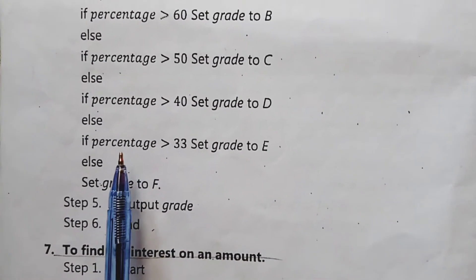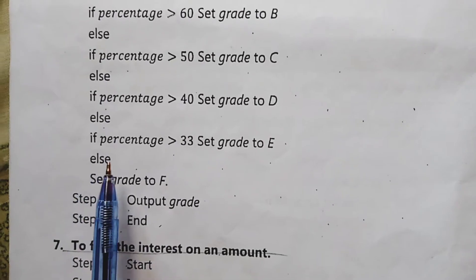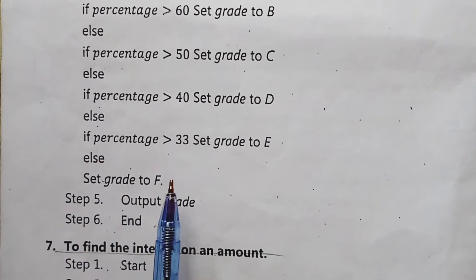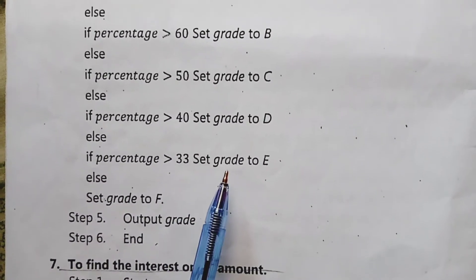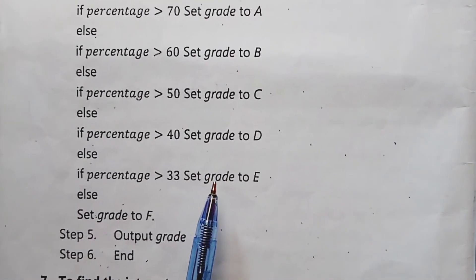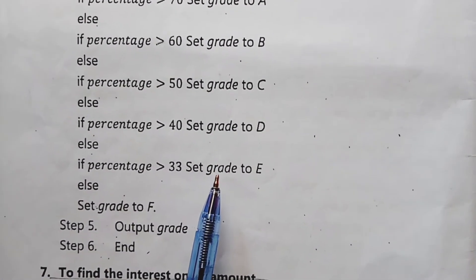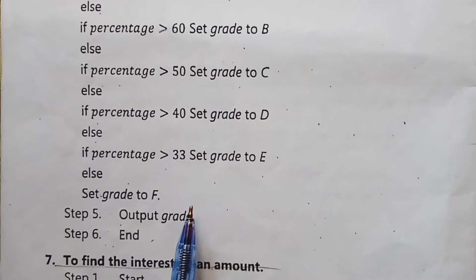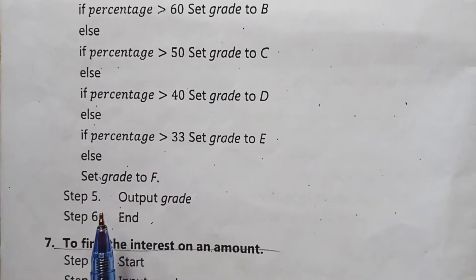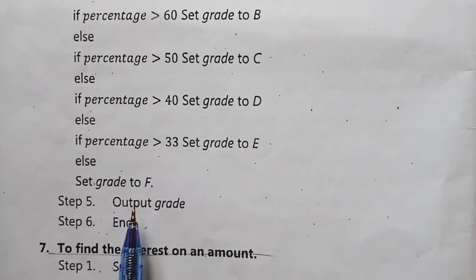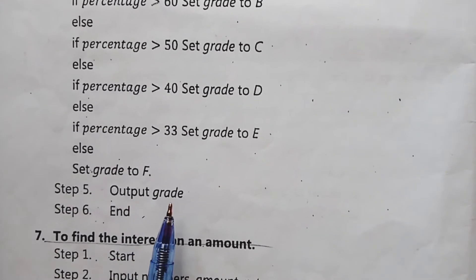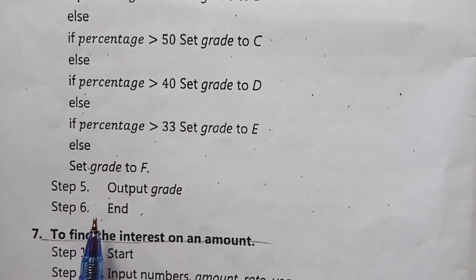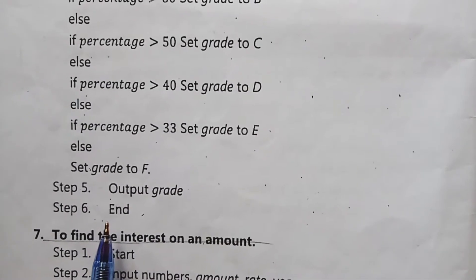If the condition for greater than 33 is false, the else path prints grade F — meaning if the percentage does not meet any of the thresholds (80, 70, 60, 50, 40, 33), grade F is assigned. Step number 5 is the output of grade, and step number 6 is the end of the algorithm.